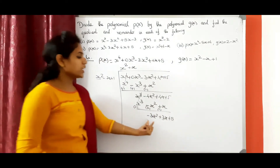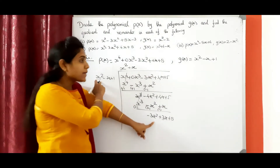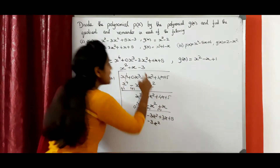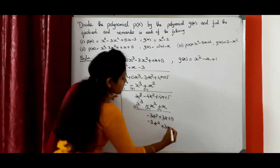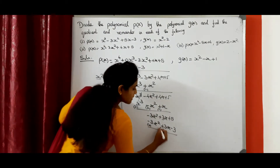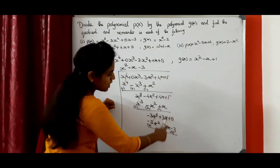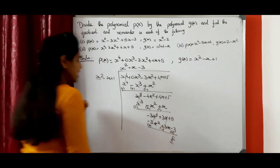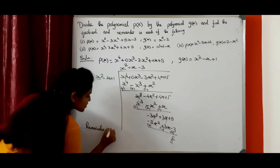Next, same procedure — we need to eliminate the first term. Here minus 3 X square is there, and here only X square is there. Which term do we need to multiply? Minus 3. Minus 3 into X square gives minus 3 X square. Minus 3 into minus X gives plus 3 X. Minus 3 into 1 gives minus 3. Next, we need to change the sign: minus becomes plus, plus becomes minus, minus becomes plus. This one cancels, and plus 3 X minus 3 X also cancels. So plus 5 plus 3 equals 8. Therefore, the remainder is 8.